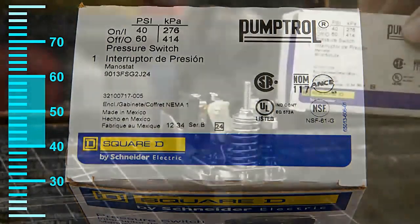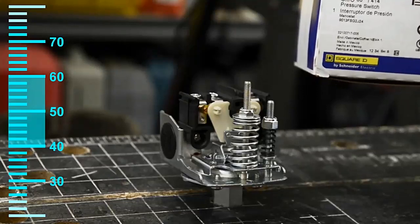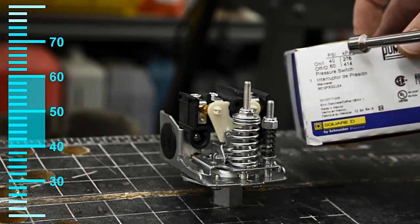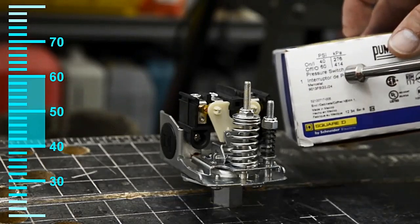There's also 30-50s that are used for household well pumps. For commercial applications that require a little more pressure, it's more often that you're going to see a 40-60.